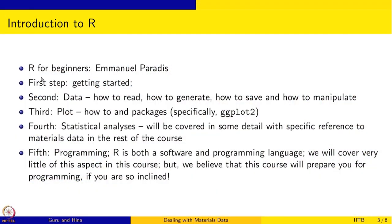If you look at a book like R for Beginners by Emanuel Paradis, there are about five sections. The first one is getting started. The second is called data — how to read data, how to generate data, how to save data, and how to manipulate data.